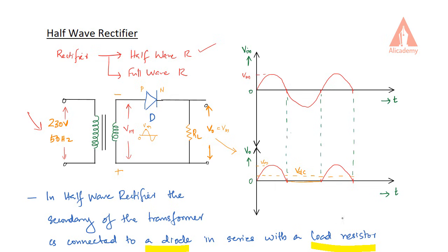So the half-wave rectifier produces output in either one of the half cycles — either in the positive half cycle or in the negative half cycle. If this session was helpful, please subscribe, like, and share.